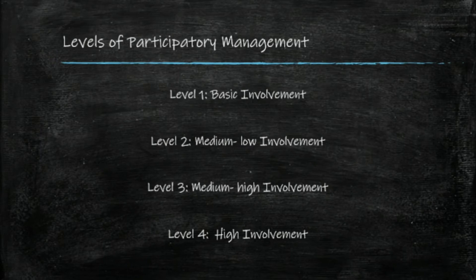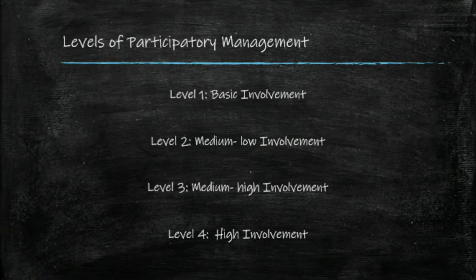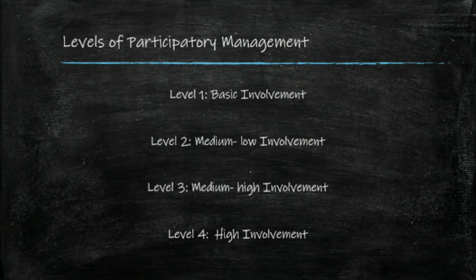Under the first level, basic involvement, it is a one-way information approach. The management team makes the decision and the employees are informed. Employees are expected to accept the decision. The second level is defined by convince — the main focus is that the positive aspect is developed and a feeling of ownership is developed.